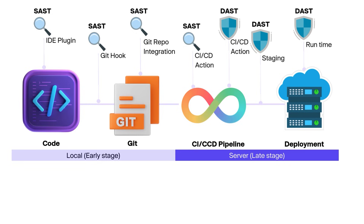DAST, on the other hand, finds things a little bit later. You can integrate DAST tools into your CI/CD pipelines and run simulated attacks after your application is compiled, so it doesn't need to wait until production. But once it finds a vulnerability, it typically needs to be handled by security personnel who communicate with developers to get it fixed, and then the application needs to be redeployed. It's better to find things earlier, and SAST runs earlier in the software development lifecycle.